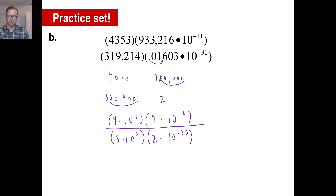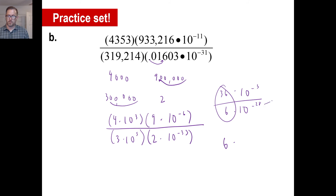So 4 times 9 is 36, times 10 to the 3 plus negative 6, which is negative 3. Then 6 is here — 10 to the 5th plus negative 33, which is negative 28. 36 divided by 6 is 6, and we can move this up here — it turns into positive 28. So we have 6 times 10 to the 25th power as our approximate answer.